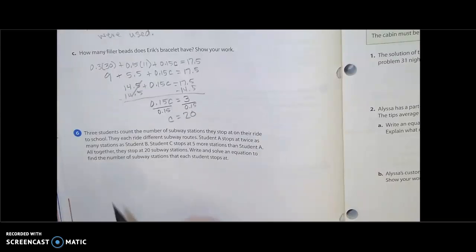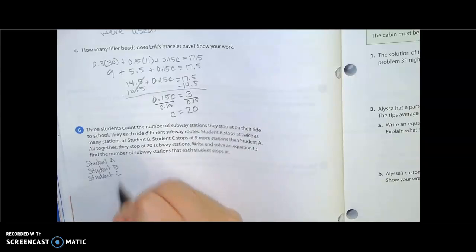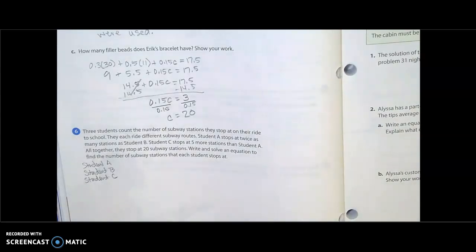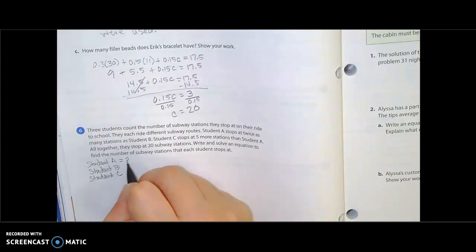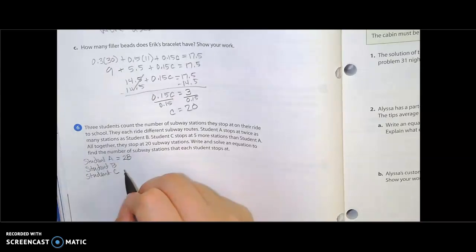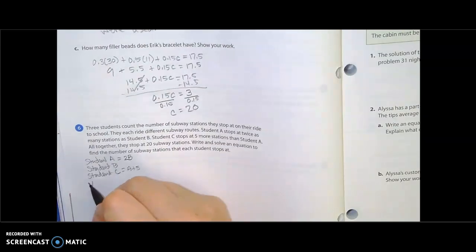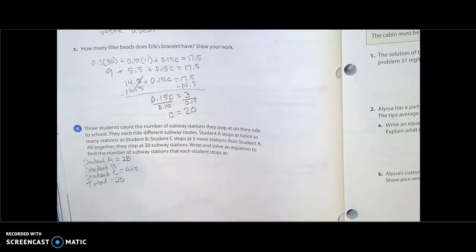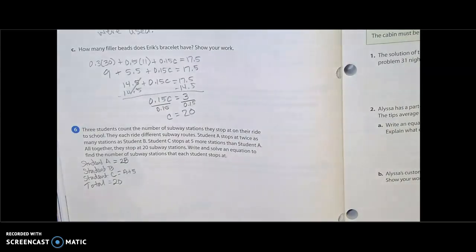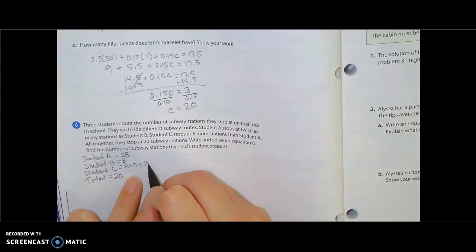So we have student A, student B, student C. What do we know about student A? Well, student A stops at twice as many stations as student B, so student A is 2B because he's twice as many as student B. Student C stops at five more stations than student A, so C would be A plus five. And then total we have 20 stations. We have nothing about how many stops B has, so that would be our unknown. So we're going to call that B. I need to get it to where it's one variable, but I know A in terms of B, so we're going to change student C from A plus five to 2B plus five.